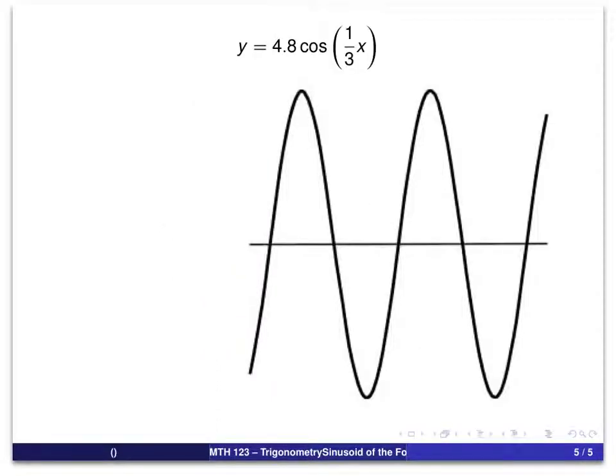So, our first example is y equals 4.8 times cosine of one-third x. And so, because this is a cosine curve, I'm going to draw the vertical axis where we did on the last one, about right through there.